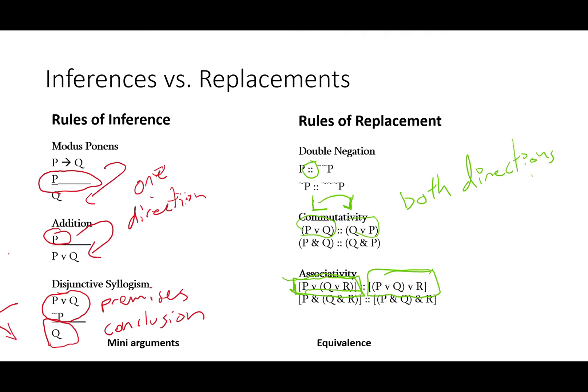Rules of replacement, however, go in both directions. You can go from either P or Q to either Q or P, straight back to either P or Q, back to Q or P, as many times as you'd like, though I don't know why you'd like to do it more than once.